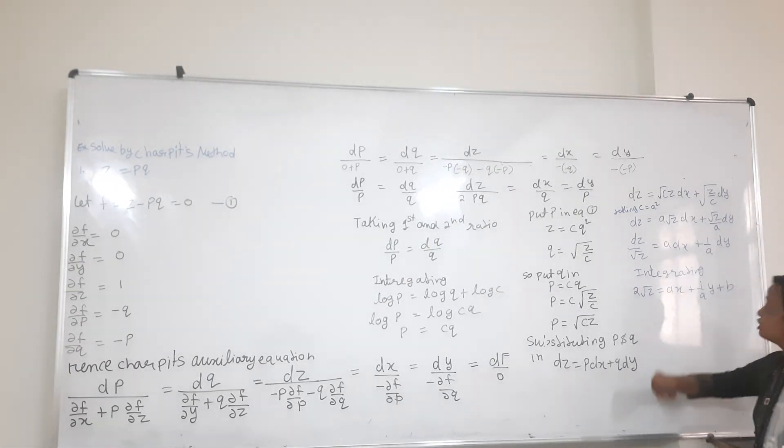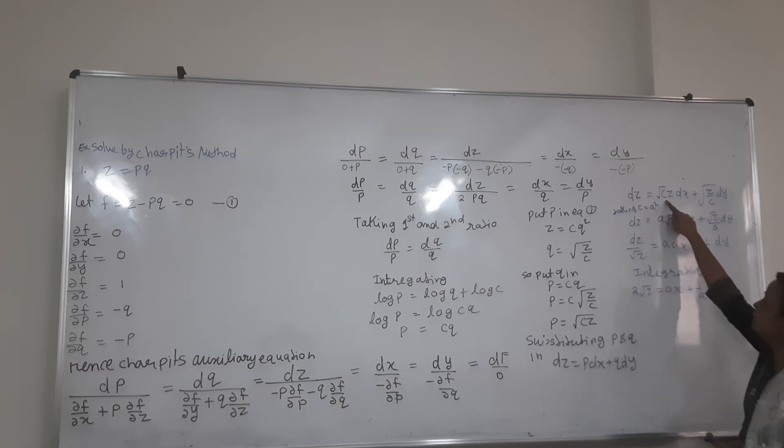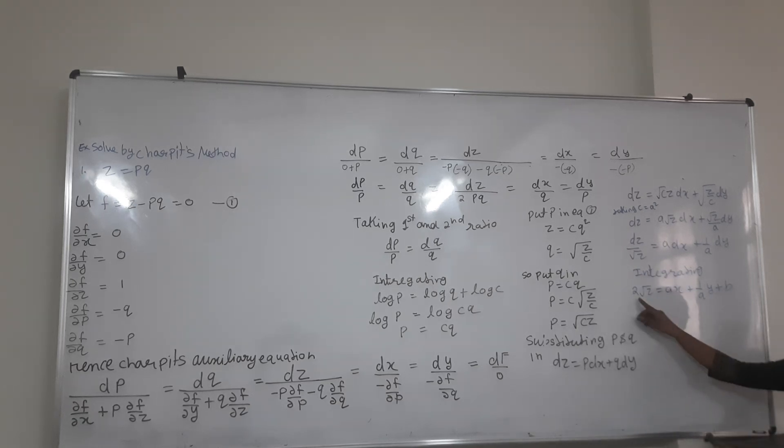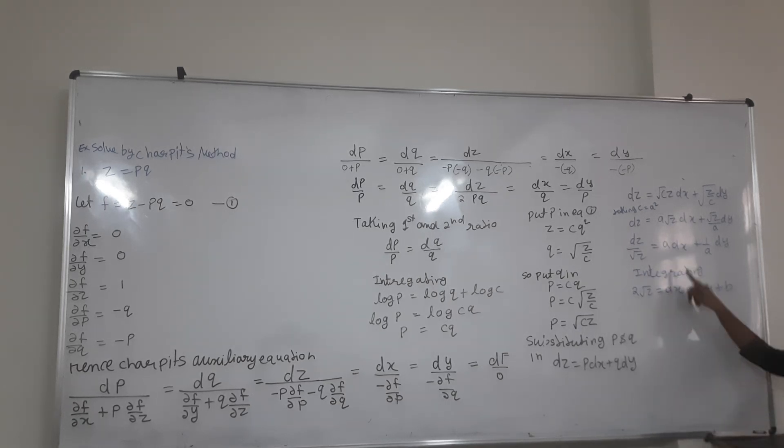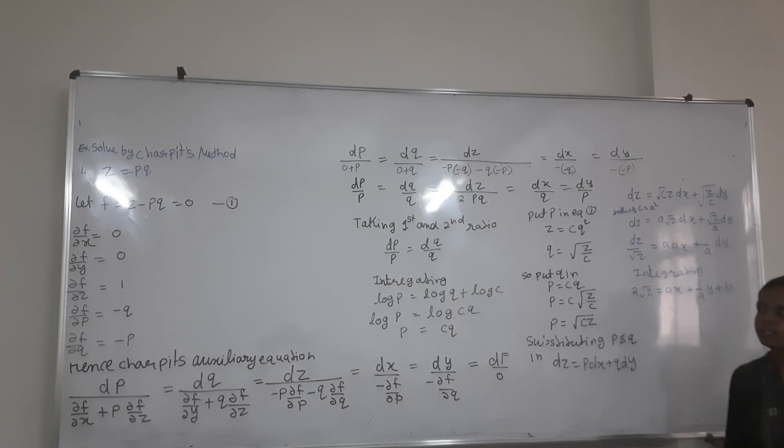If Z equals CQ squared, then we can write C in terms of Z. Taking the square root, square root of Z over Q equals C. Root Z is common, and we integrate root Z to get the integration with respect to X and Y plus constant B.